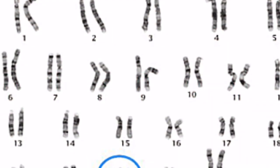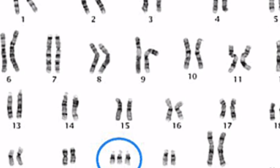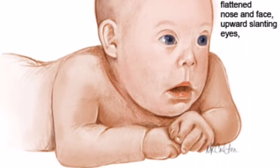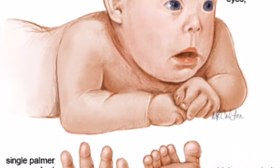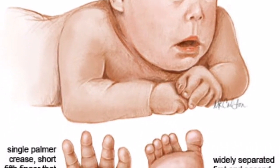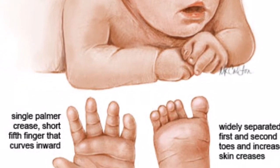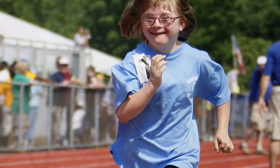Down syndrome is a genetic disease that usually occurs because of an extra 21st chromosome — instead of two, there are three. Down syndrome causes health problems and learning difficulty. People with down syndrome have flattened noses, upward slanted eyes, and large spaces between the first and second toe.